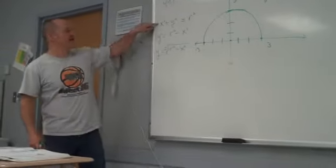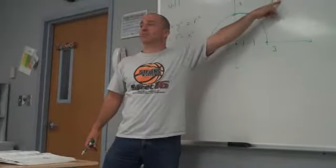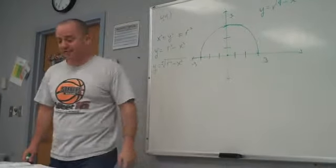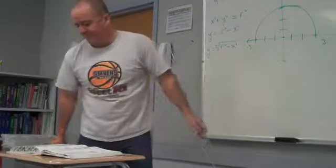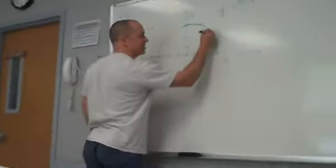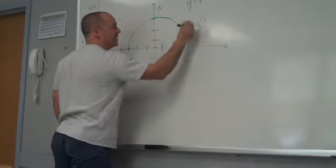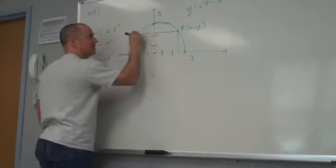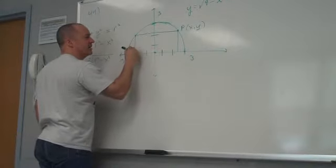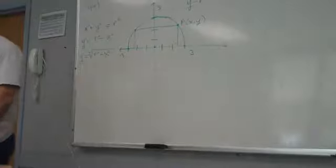So this process here, starting from the equation of the circle, is where this equation comes from. This is the function which draws the top half of a circle. Now there's a rectangle they draw in here. They show this point, and they call this point just (x, y). And there's a rectangle in here.